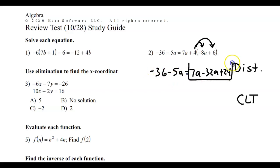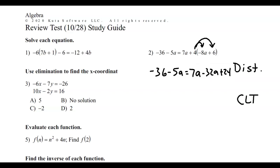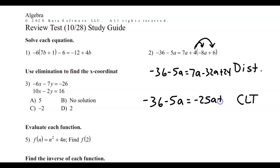But as I look on the right side, I do have some terms I can combine. The 7a and the 32a both have an a, so I can combine those together. 7 take away 32 — I believe that would be negative 25a. So these two terms come together to make that.